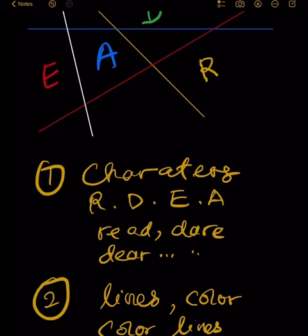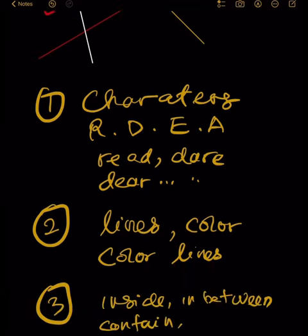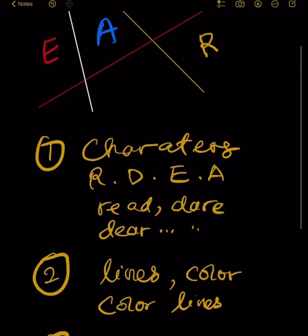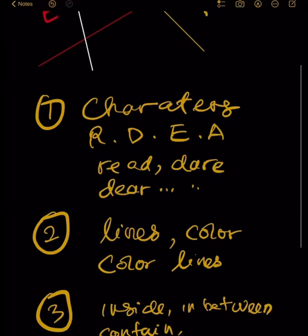We do not know which one is referred to at the moment. The third category of information is that the characters are somehow inside or in between the lines — it could be in between, it could be inside, and so on.